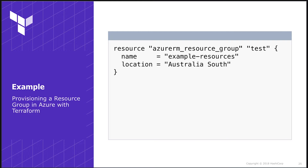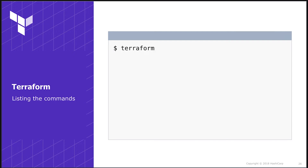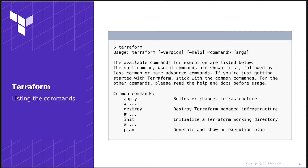So this is what a resource looks like in Terraform. But how do we go from this to actually provisioning the resource group? Terraform is a command line application — we just download the binary and run it. Running Terraform without arguments shows us what commands it supports. I want to call out four of them: init, plan, apply, and destroy. These are the four main workflows that Terraform enables.